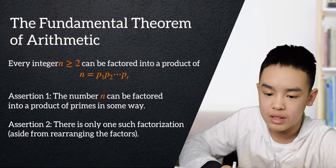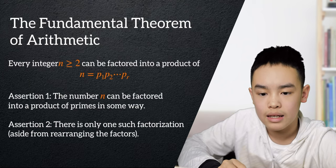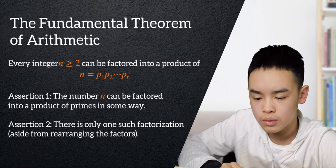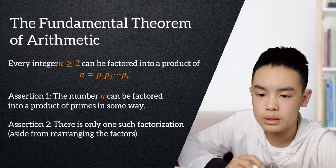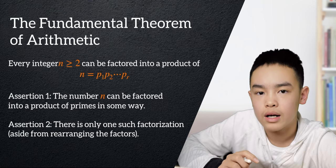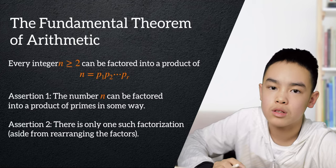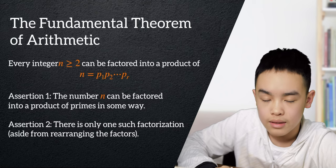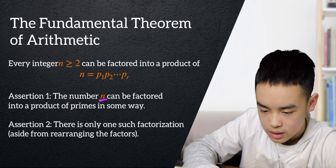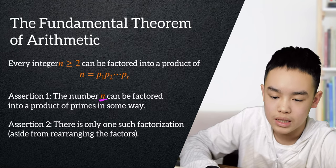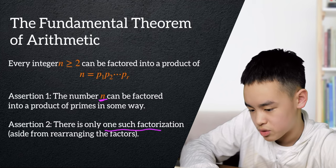Now we have come to the fundamental theorem of arithmetic. Every single integer n is greater or equal to 2 can be factored into a product of n equals p1 times p2 all the way to pr where these are primes. And there's only one way of factoring them. So first we'll prove that this number n can be factored into primes. And then we'll prove the other assertion that there is only one such factorization.